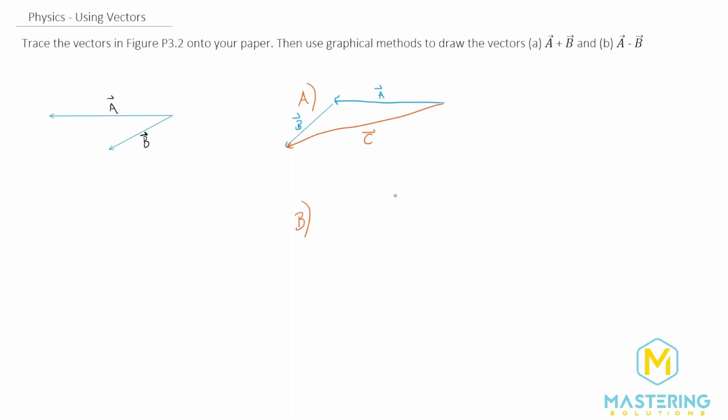Now when we do subtraction, it's a very similar process except you just invert or flip the second vector, so in this case B.